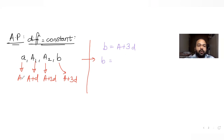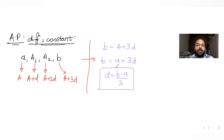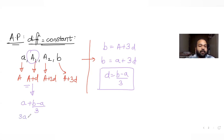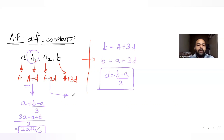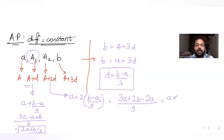Here a is the first term and b = a + 3d, giving d = (b − a)/3. So the first arithmetic mean a1 = a + d = a + (b−a)/3 = (2a + b)/3. The second arithmetic mean a2 = a + 2d = a + 2(b−a)/3 = (a + 2b)/3. These are our two arithmetic means.